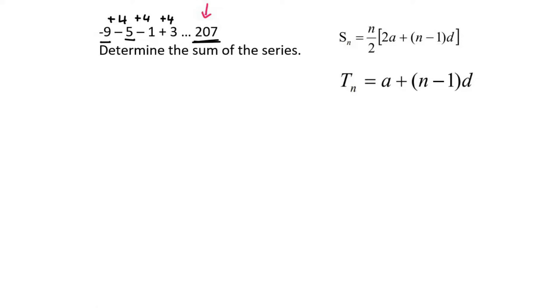So we can use the Tn formula because that 207 is not a sum, it's an actual term. So we can say 207 is equal to a which is minus 9 plus n we don't know.